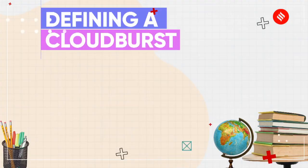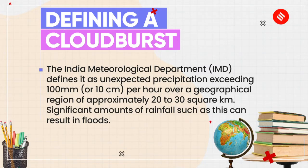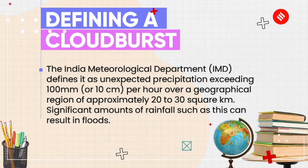Cloudburst refers to an extreme amount of rain that happens for a short period, sometimes accompanied by hail and thunder. The IMD defines cloudburst as unexpected precipitation exceeding 100 mm or 10 cm per hour over a geographical region of approximately 20 to 30 km². Significant amounts of rainfall such as this can result in floods. You must note that basically all instances of cloudburst involve heavy rain in a short period, but all instances of heavy rain in a short period are not cloudbursts if they do not fit this criteria.